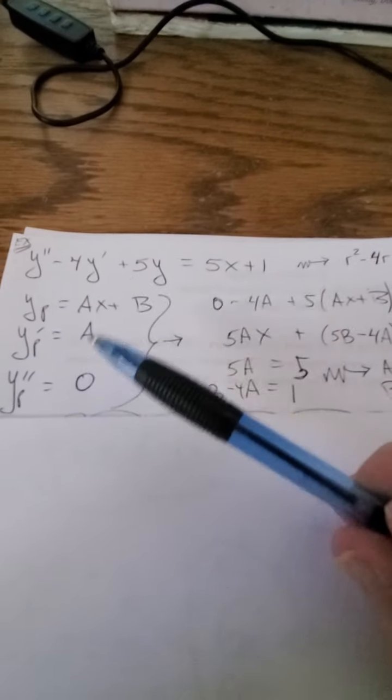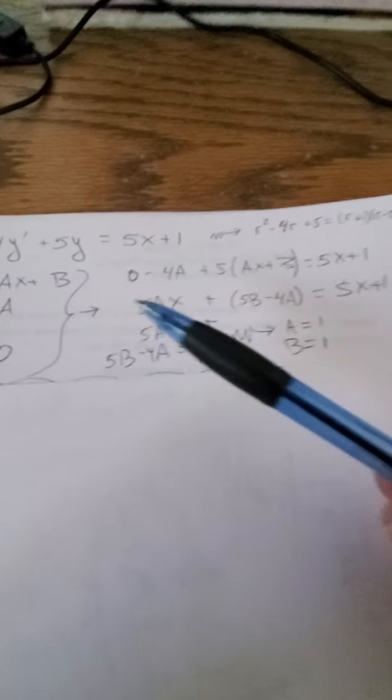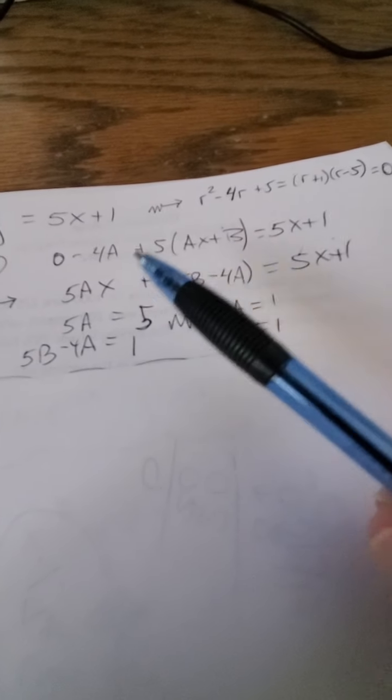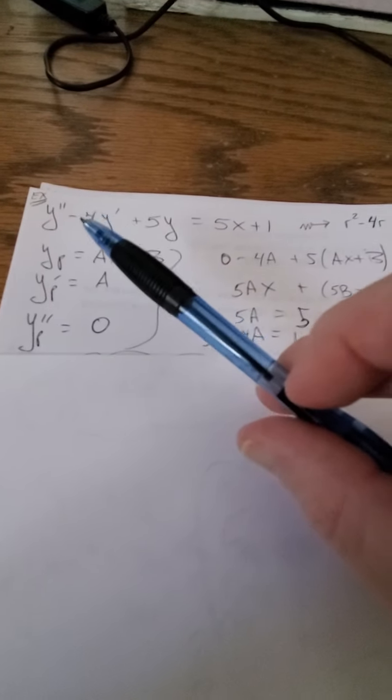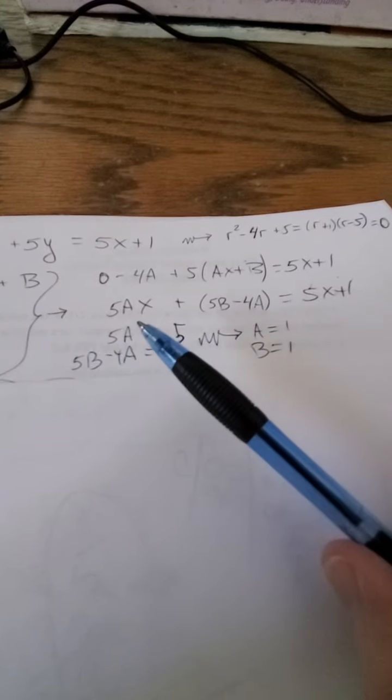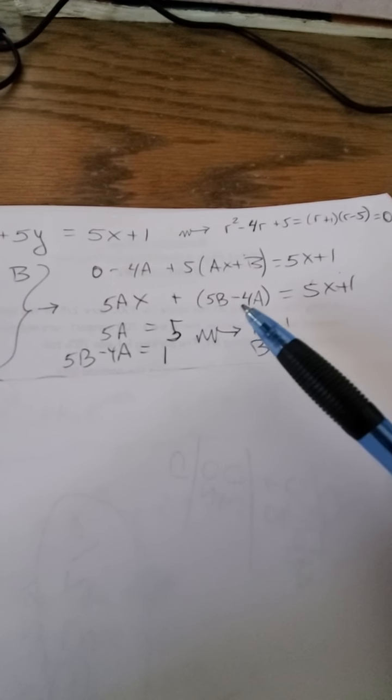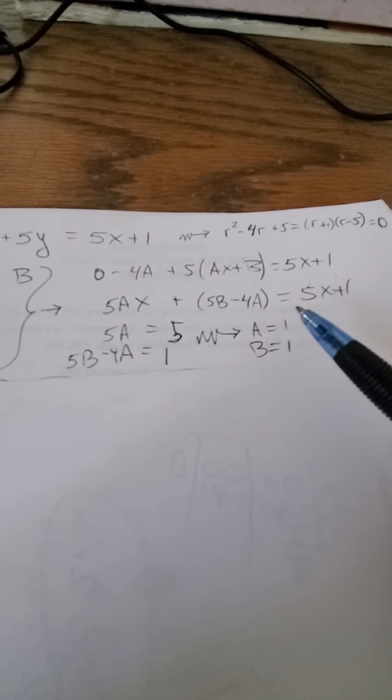And when I take this and plug it back into the original differential equation, I get 0 minus 4a plus 5 times ax plus b equals 5x plus 1. Again, I'm just taking these values here and plugging them into the original equation. And that becomes 5ax plus 5b minus 4a equals 5x plus 1.